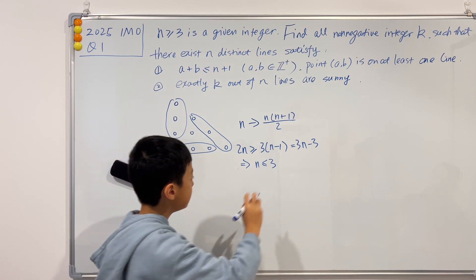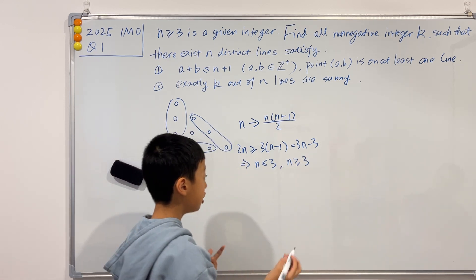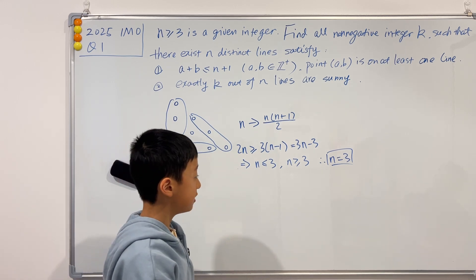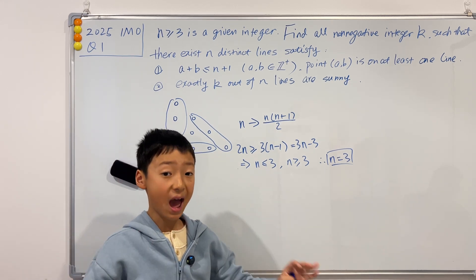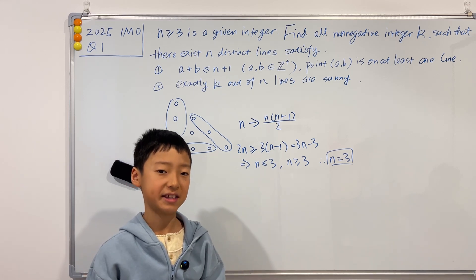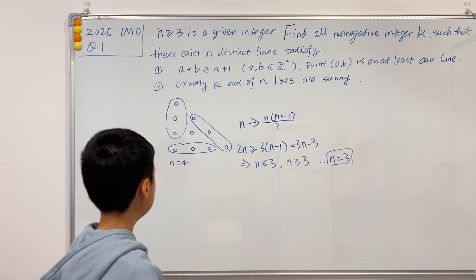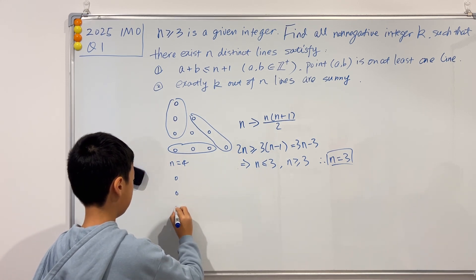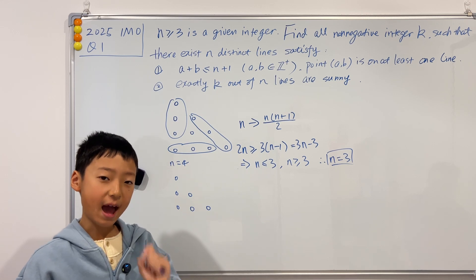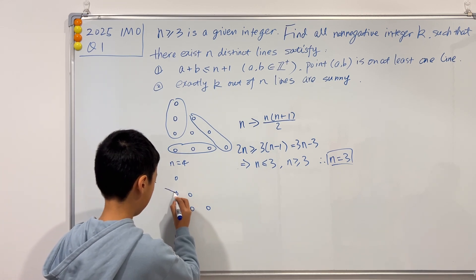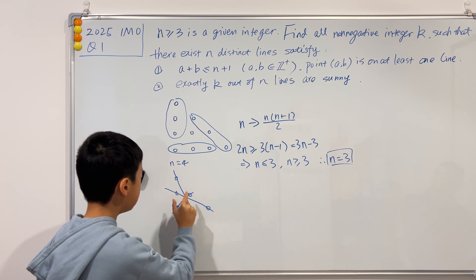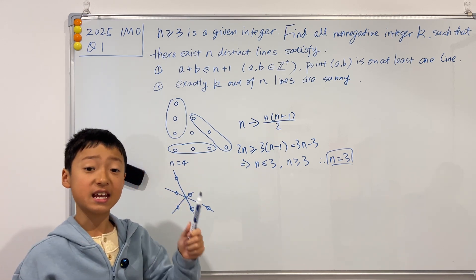Our condition says n is greater than or equal to 3. Unpacking 2n ≥ 3n minus 3 gives us n less than or equal to 3. Combined with n ≥ 3, we get n must equal 3. So n equals 3 is the only case where we can have no side lines, which means this case probably has the most sunny lines possible. If we draw n equals 3, you can actually have three sunny lines — k equals 3 is another valid value.